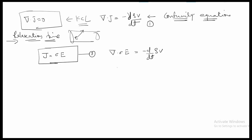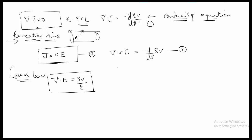Applying Gauss's law — which states that del dot E equals ρv divided by epsilon — we now have a third equation to work with. We will substitute Gauss's law into our continuity equation expression to eliminate E.